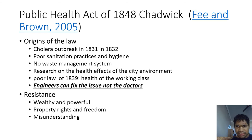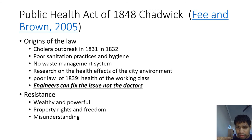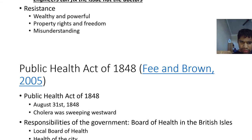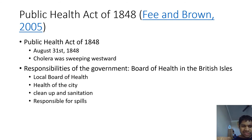The Public Health Act of 1848, associated with Chadwick, aimed to improve sanitation — an engineer's solution rather than a doctor's solution to improving people's health. Resistance came from the wealthy and powerful, who felt their rights would be inhibited, due to a lack of understanding. It took place on August 31, 1848, and established responsibilities for both the central and local government.